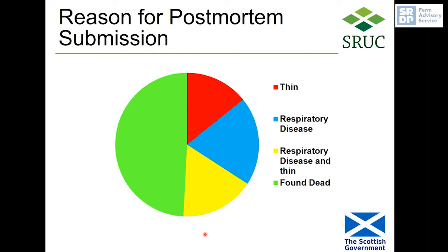Looking at animals diagnosed with OPA at post-mortem, about half of all cases are submitted simply because they've been found dead, and many of these sheep are still in good body condition. Ill-thrift and respiratory disease are the other main reasons. Often these sheep have a history of being treated once or twice with antibiotics for suspected pneumonia but not improving — because they have lung tumours.